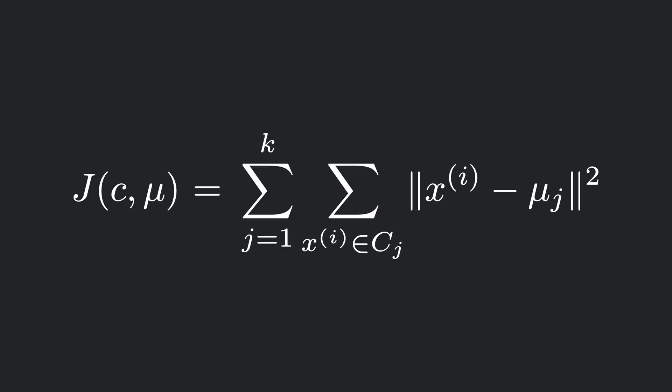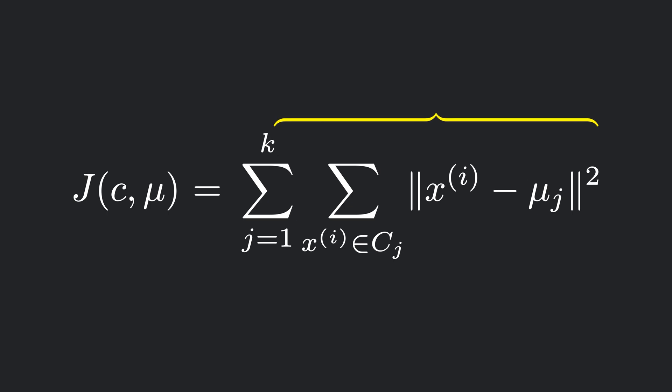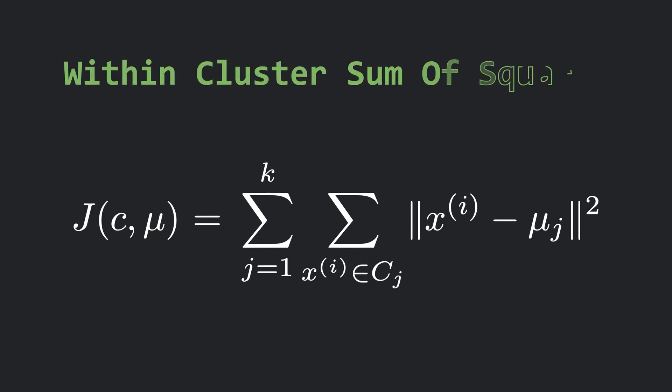What we are actually doing in k-means is minimizing a cost function, usually denoted as J. This function measures how far each data point is from its assigned centroid. Mathematically, it is written with a double summation: the inner summation represents the assignment of data points to a particular cluster, and the outer summation means we are doing this for all k clusters. This function is called the within-cluster sum of squares. In simple terms, the algorithm moves the centroids such that this cost always decreases with every iteration of k-means and will never increase.